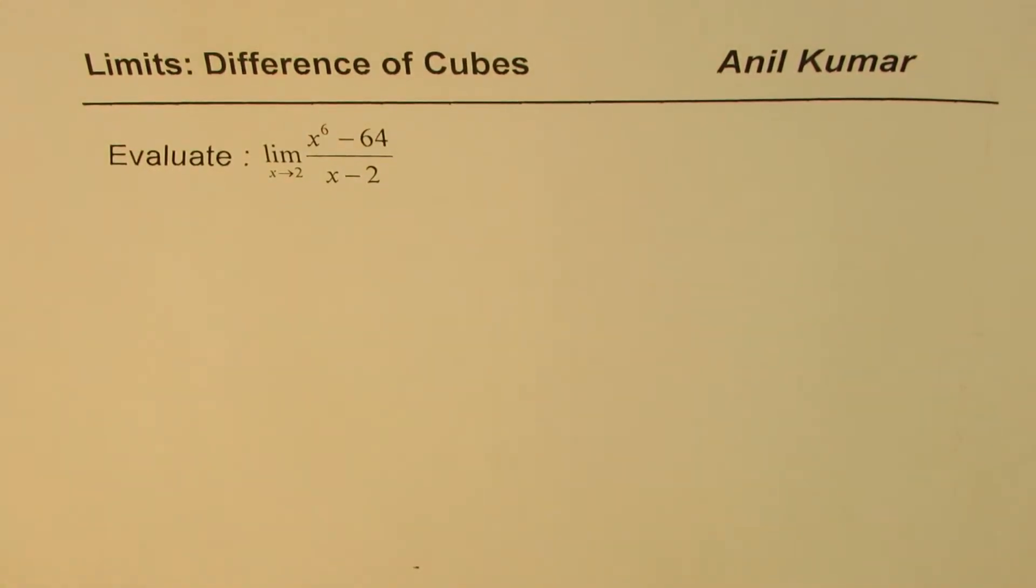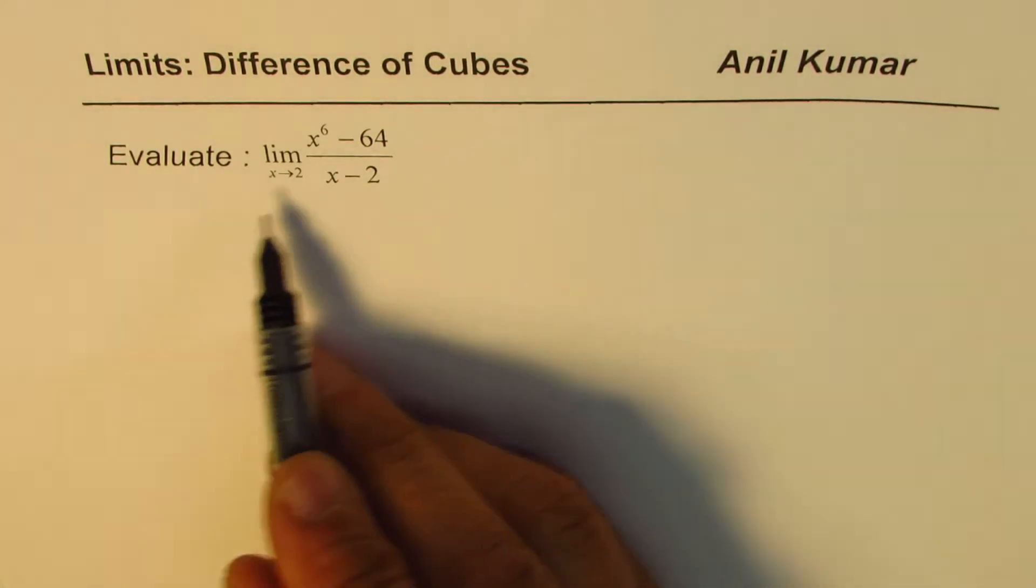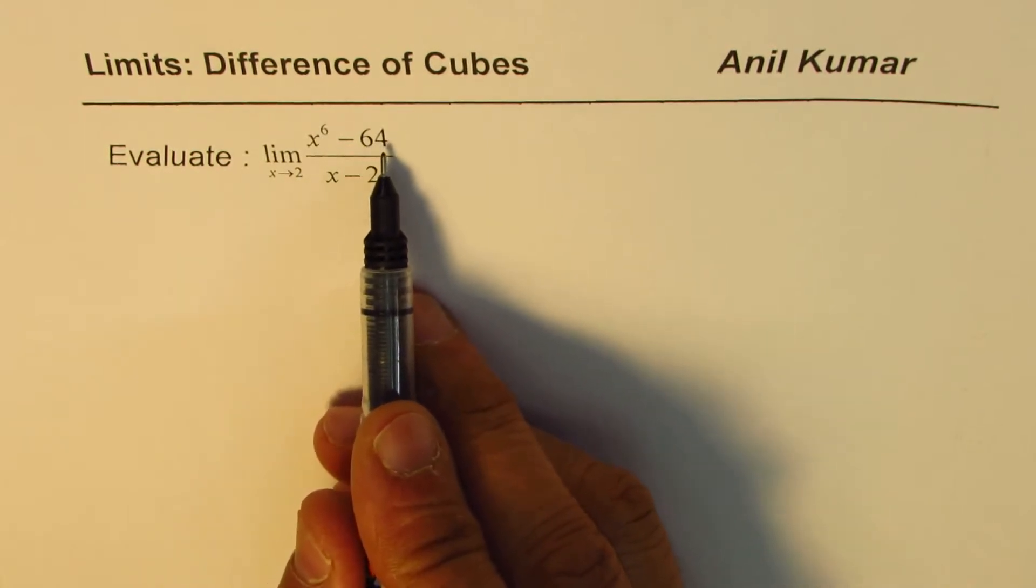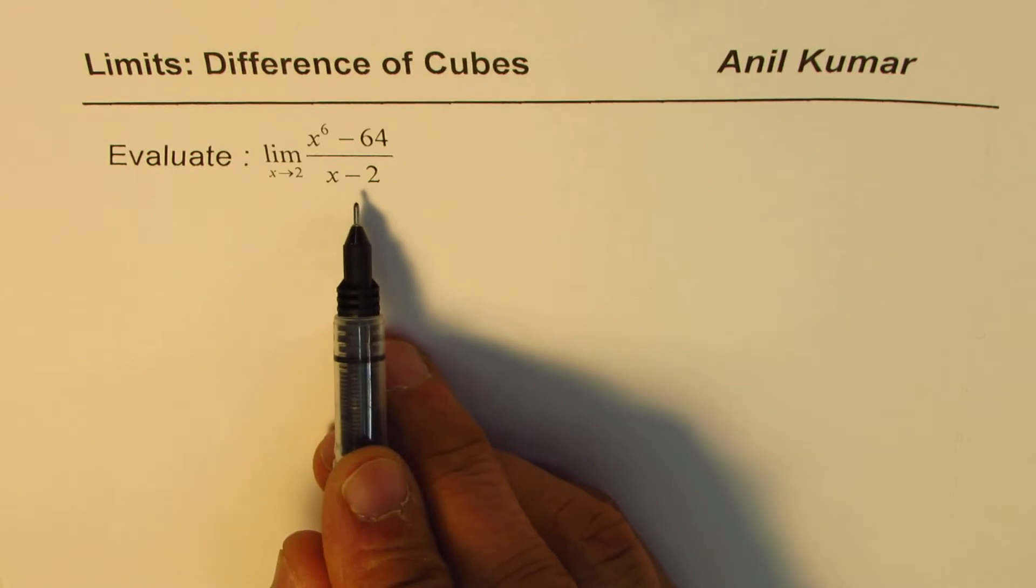I'm Anil Kumar. In this example, we'll apply difference of cubes to evaluate limits. The question is, evaluate limit when x approaches 2 for x to the power of 6 minus 64 divided by x minus 2.